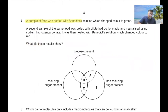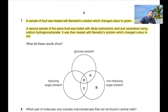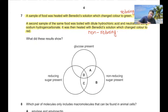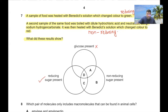Question 7: A food sample heated with Benedict's solution changed color to green, indicating presence of reducing sugar. A second sample was boiled with dilute hydrochloric acid, neutralized, then heated with Benedict's solution — the color changed to red, representing non-reducing sugar, because there is an increase in reducing sugar after hydrolysis. This result shows reducing sugar and non-reducing sugar are present, so option C.